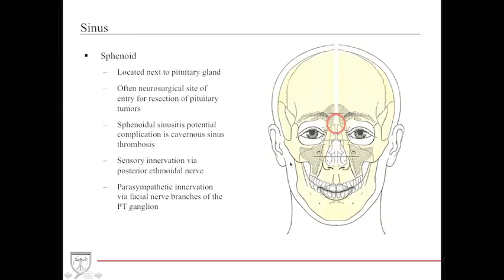The sphenoid sinus is located immediately adjacent to the pituitary gland and is used for surgical access in transphenoidal procedures. Sphenoidal sinusitis is a potential complication in cavernous sinus infections and thrombosis, because of the close proximity of the cavernous sinus, which wraps around the entire sphenoid sinus. Sensation is provided by the posterior ethmoidal nerve, and parasympathetic innervation again comes from the facial nerve via the pterygopalatine ganglion.